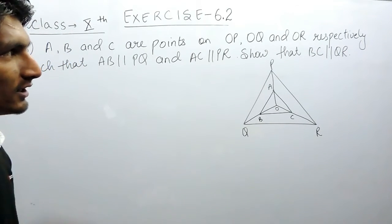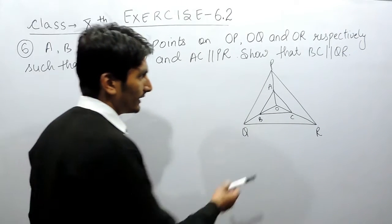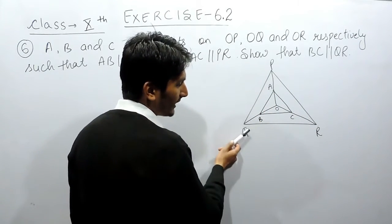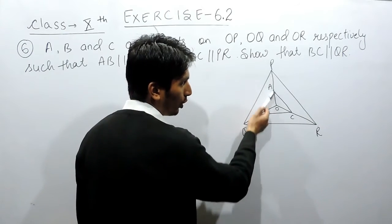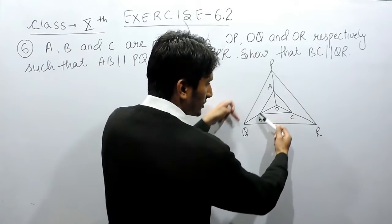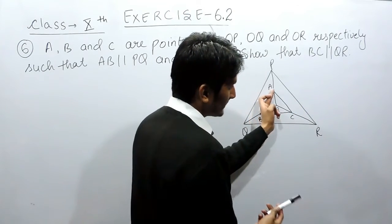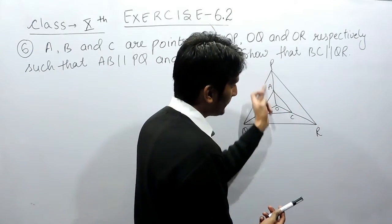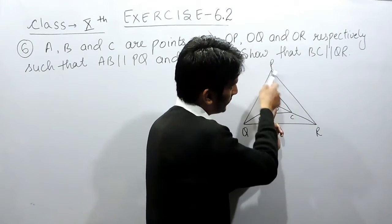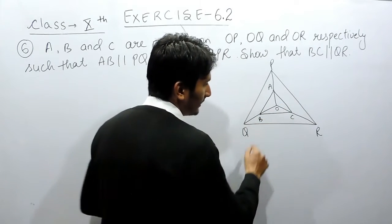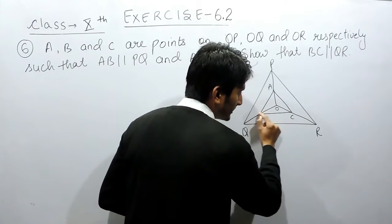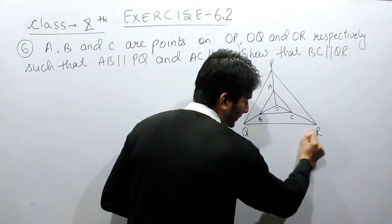You have to show that BC is parallel to QR. In triangle PQR, in triangle OPQ, AB is given parallel to PQ, and in triangle POR, AC is given parallel to PR, and you have to prove that BC in triangle OQR is parallel to QR.